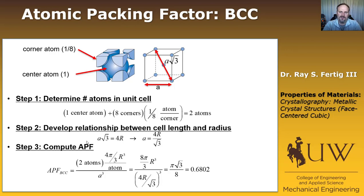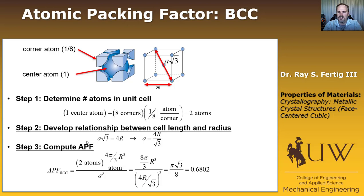So now you hopefully have a handle on the three primary structures we're going to observe in metallic materials. Primarily in this class we're going to focus on BCC and FCC, and I just want you to be aware of HCP because I might reference it periodically. After this lecture, we're going to move on to talk about very specific ways to identify features of the unit cells — points, directions, planes, and those kinds of things.